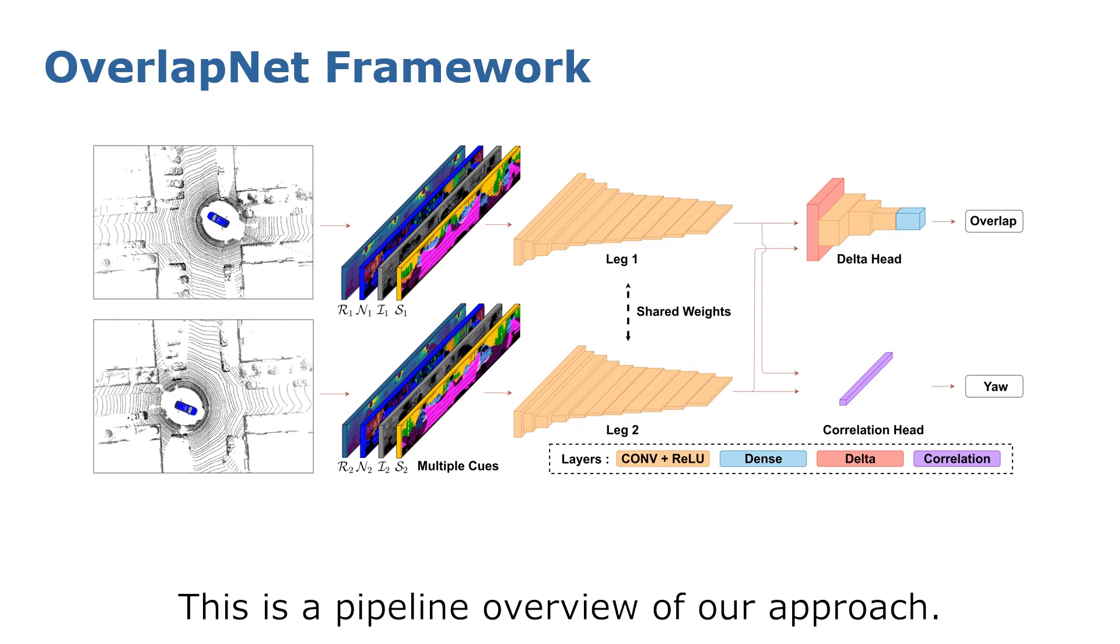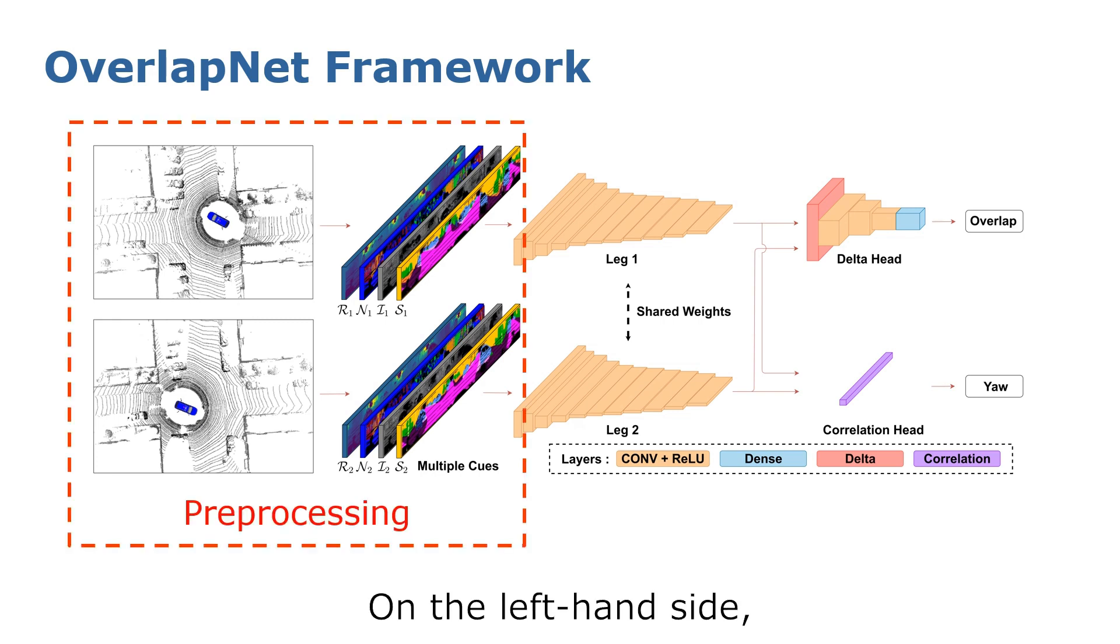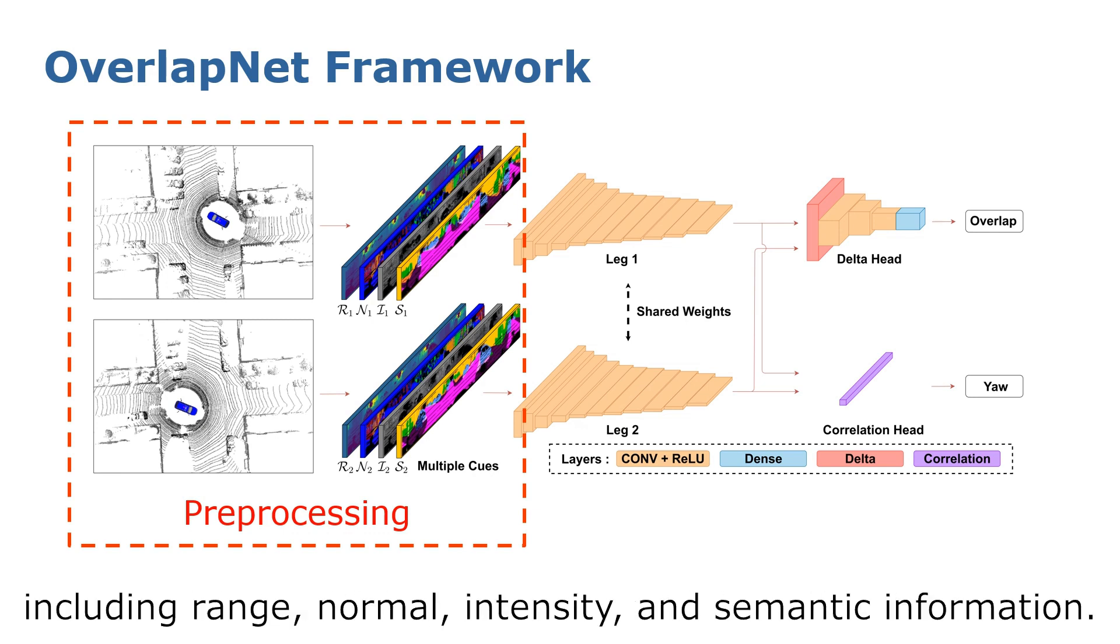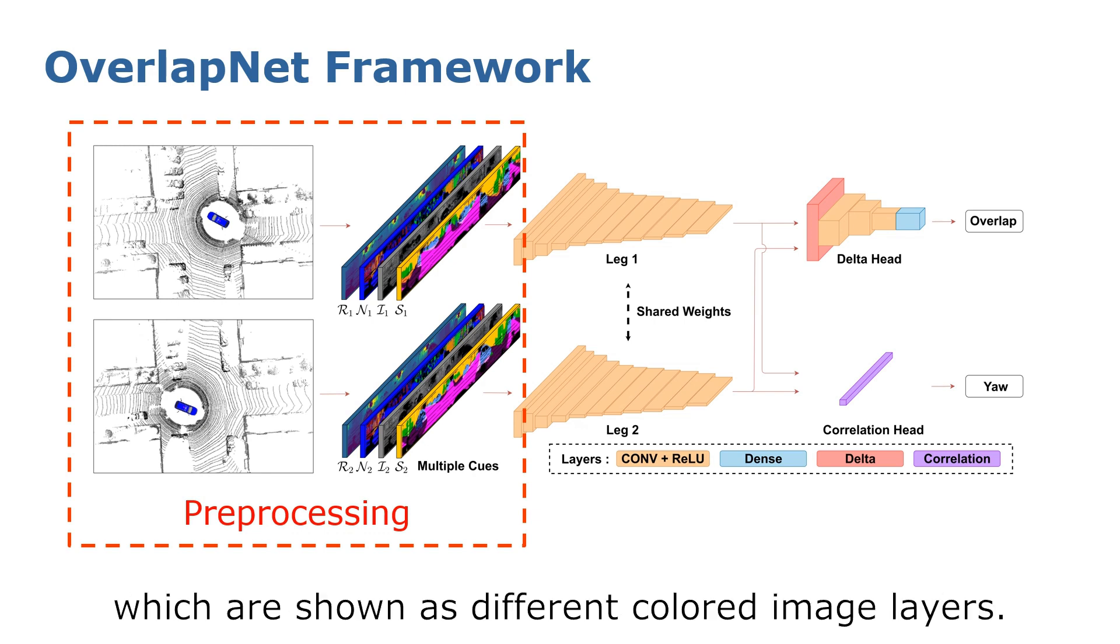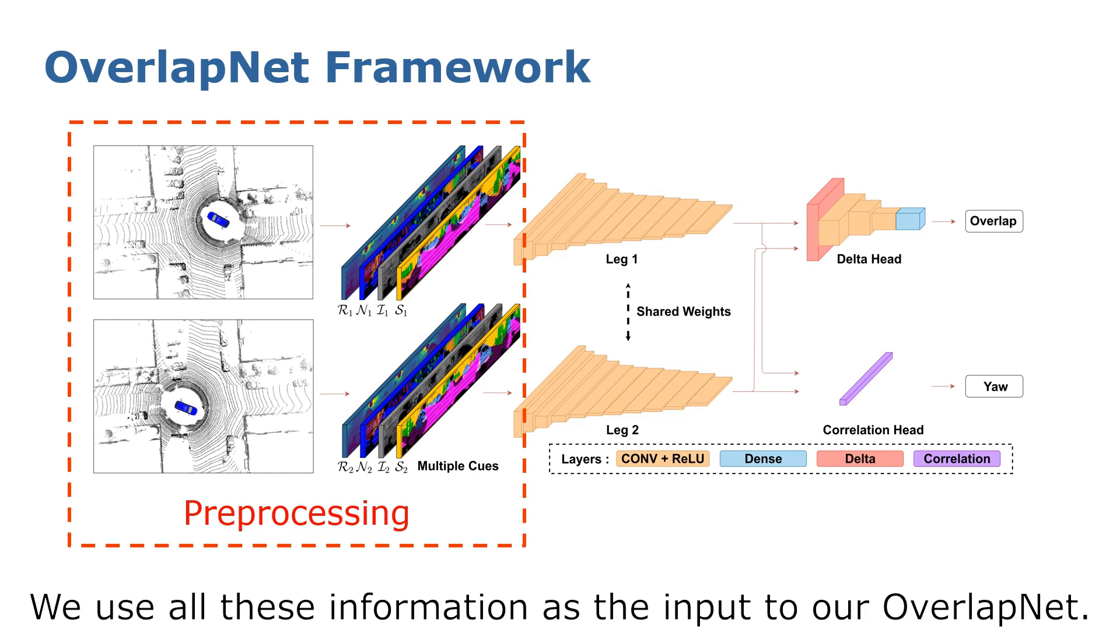This is a pipeline overview of our approach. On the left-hand side, you see the pre-processing of the input data. It exploits multiple cues generated from LiDAR scans, including range, normal, intensity, and semantic information, which are shown as different colored image layers. We use all this information as the input to our OverlapNet.